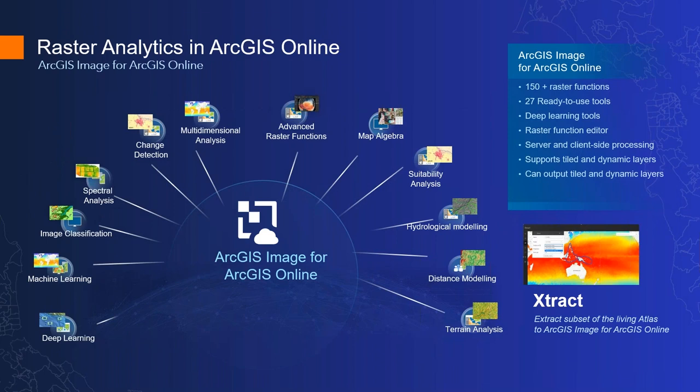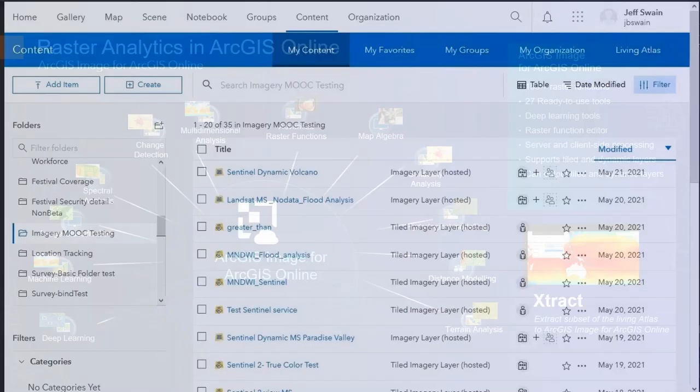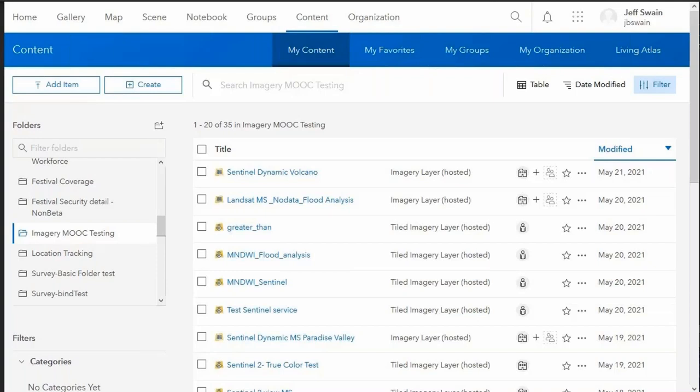Raster Analytics is available in ArcGIS Online. All the tools for performing deep learning, change detection, and other analyses are available in ArcGIS Image for ArcGIS Online. We're also creating a tool called Extract, which enables you to extract information from the Living Atlas and load it into ArcGIS Online.